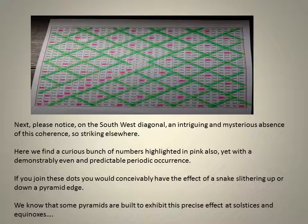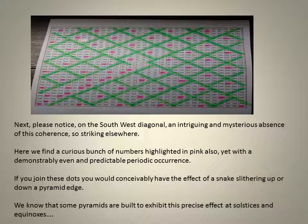Next, please notice on the south-west diagonal an intriguing and mysterious absence of this coherence, so striking elsewhere. Here we find a curious bunch of numbers, highlighted in pink also, yet with a demonstrably even and predictable periodic occurrence. If you join these dots you would conceivably have the effect of a snake slithering up or down the pyramid edge. We know that some pyramids are built to exhibit this precise effect at solstices and equinoxes.